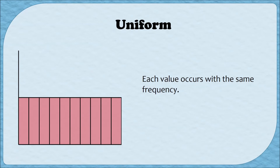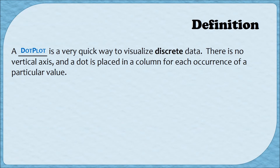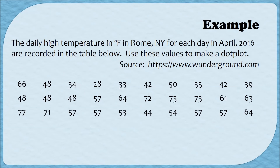Now that we've talked about the five different shapes of graphs, let's look at a really easy kind of graph to make. A dot plot is a really quick way to visualize discrete data. Dot plots are supposed to be really easy to make — you don't have to organize the data before you make the graph and you don't even have two axes. All you need is a horizontal axis on the bottom and then you're just going to form columns of dots. In this example we've recorded the daily high temperature for Rome, New York for every day in April of 2016, and we're going to use these values to make a dot plot.